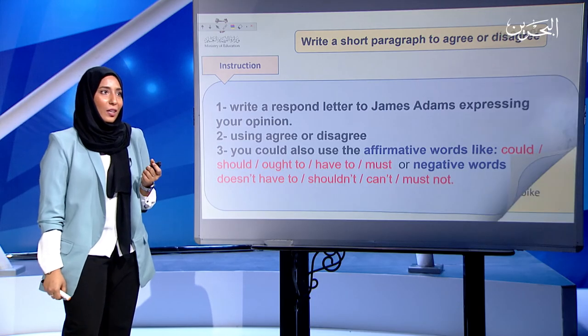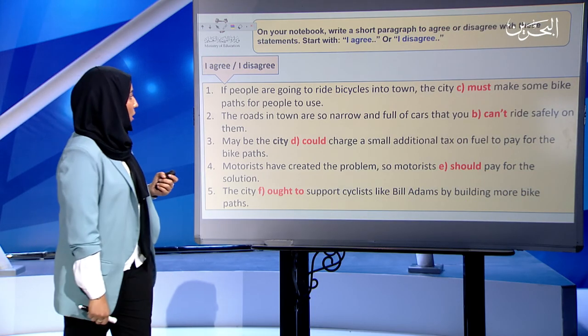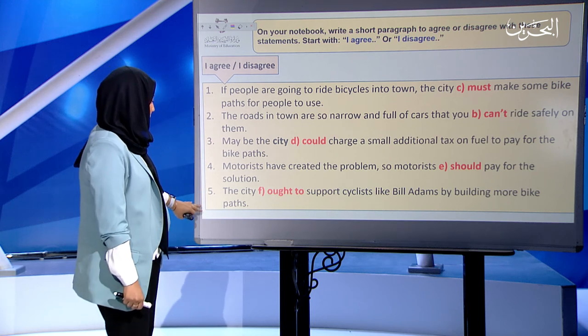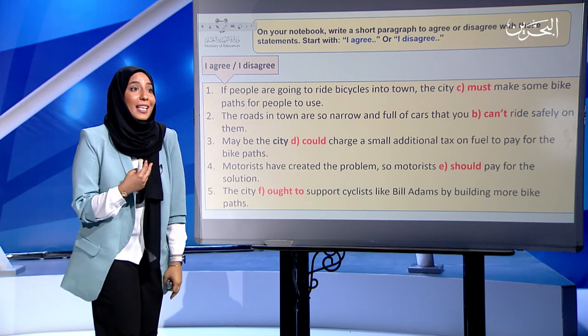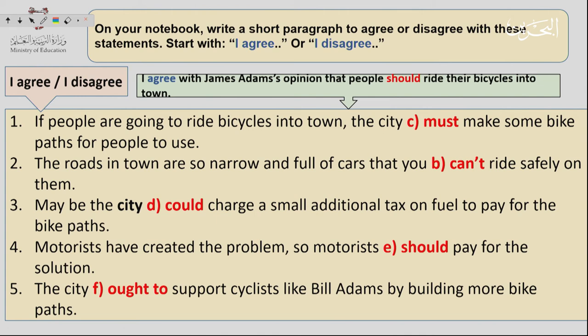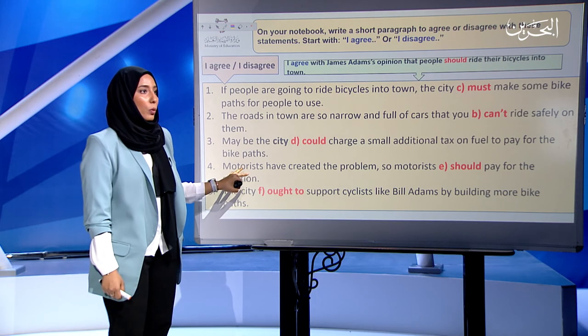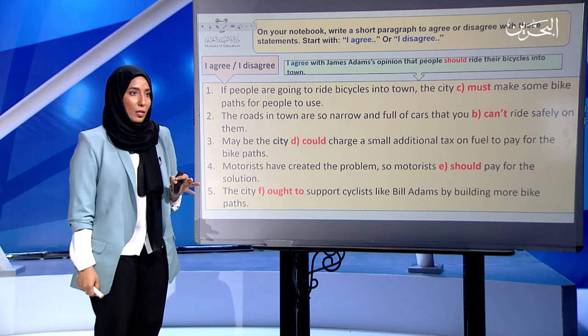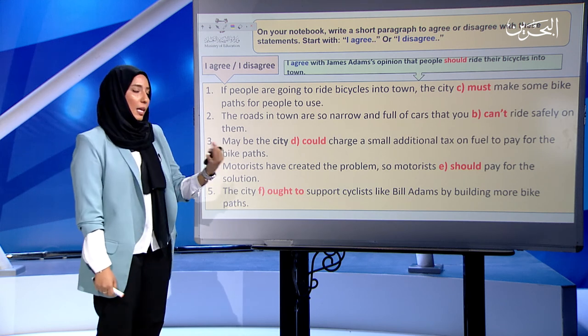Let's start writing the paragraph. I've given you a set of five sentences and I want you to use these to form the paragraph. For example: 'If people are going to ride bicycles into town, the city must make some bike paths for people to use.' Use 'I agree' or 'I disagree' in addition to the auxiliary verbs — for example: 'I agree with James Adams' opinion that people should ride their bikes into town.' I'm giving you around five to seven minutes, then we'll check our answers together.